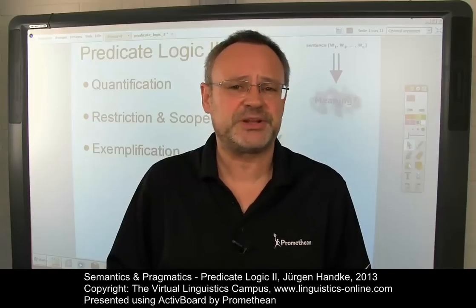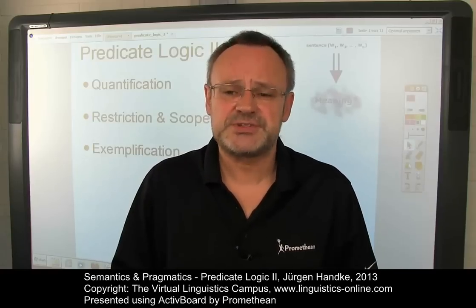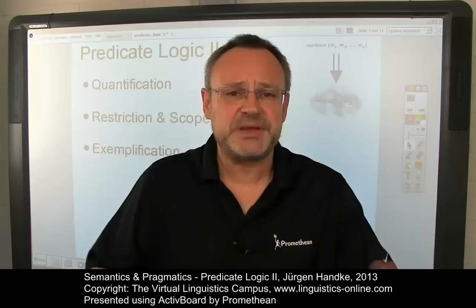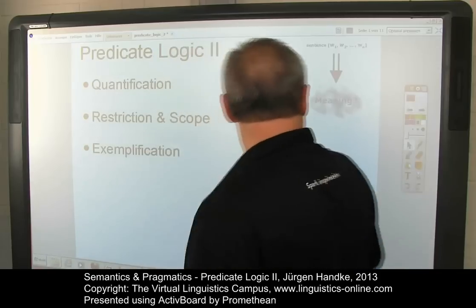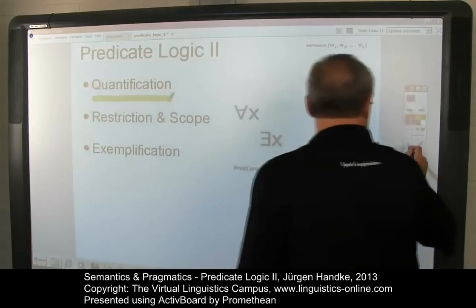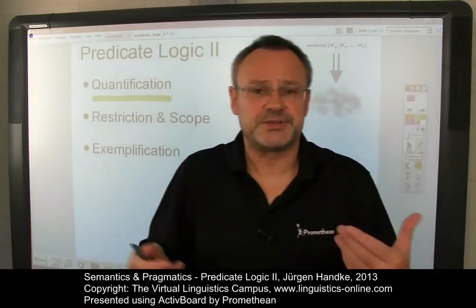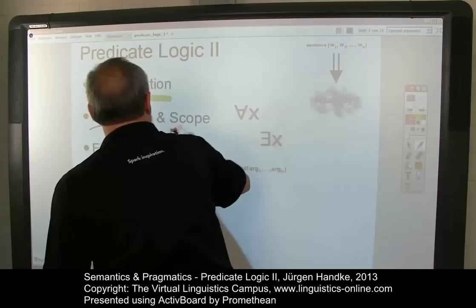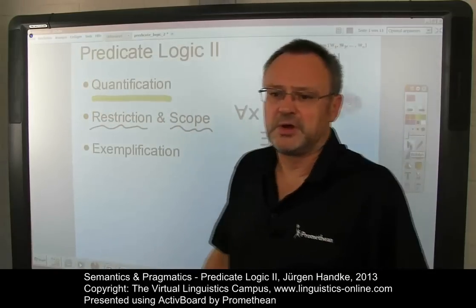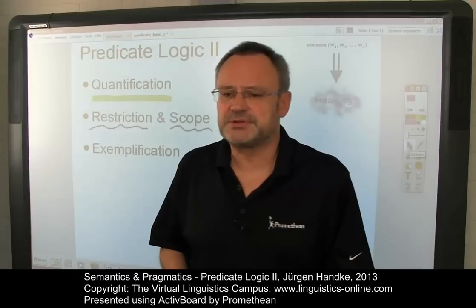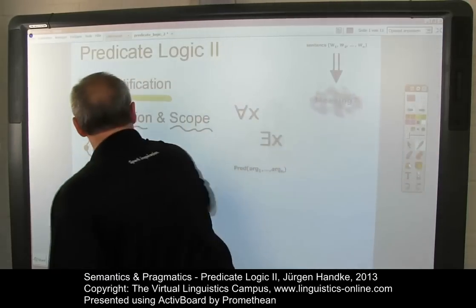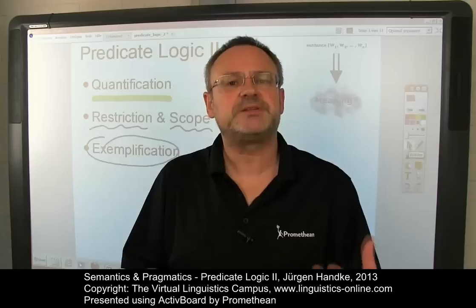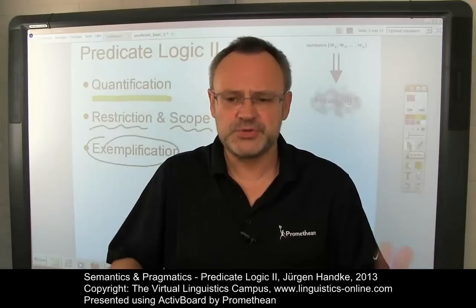We saw that predications consist of predicates and arguments, and we discussed the various types of arguments and the principles of argument structuring. This e-lecture expands the basic machinery of predicate logic by principles of quantification, and it discusses the central attributes of quantification, namely restriction and scope. Furthermore, we will use several examples to illustrate our main points. But before we dive into all this, let's repeat the outcome of Predicate Logic 1 using some examples.